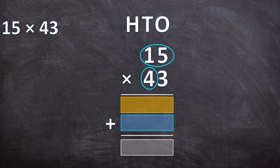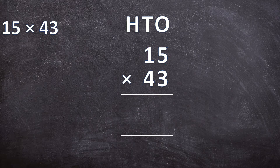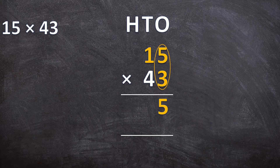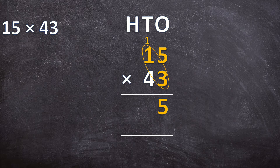Now let's do this exact example together. We start with 15 times 43, already written neatly underneath each other. The first thing we do is multiply the 3 with the 15. So we start with the ones: 3 times 5 is 15, so we write down the 5 and carry the 1 to the tens place. Now we multiply 3 by 1: 3 times 1 is 3, plus the carried 1 is 4. So the answer for 3 times 15 is 45.